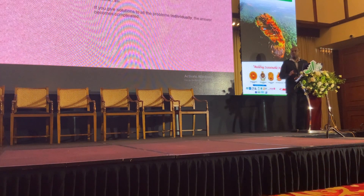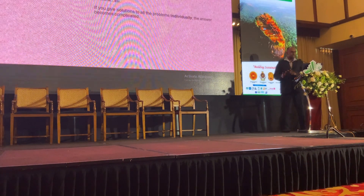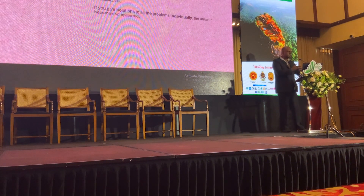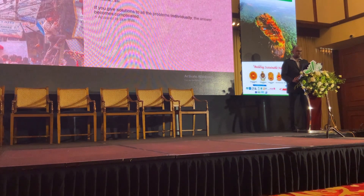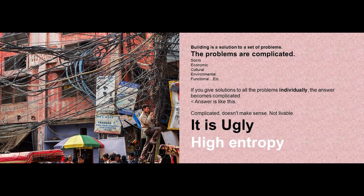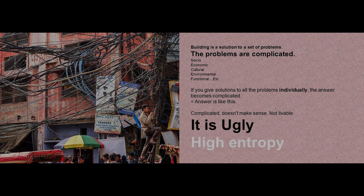So if I use a solution to each of these problems individually — I take the social problem, I solve it, then go to the environmental problem and solve it — if I solve these problems individually one by one, the answer becomes something like this. This is how Indians have solved the problem in very complicated ways. It's complicated, it makes no sense, it's not livable, it's ugly, and it's high entropy.